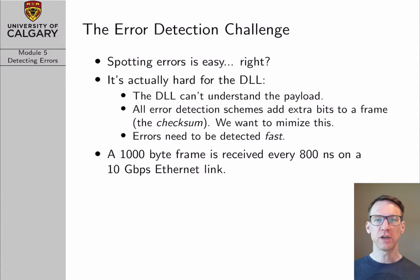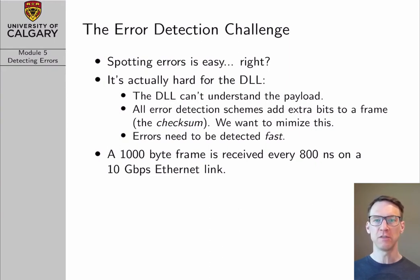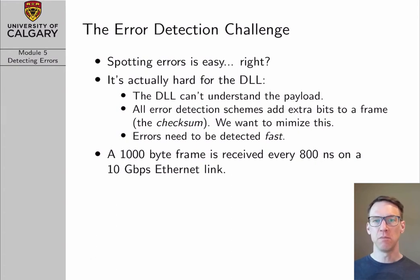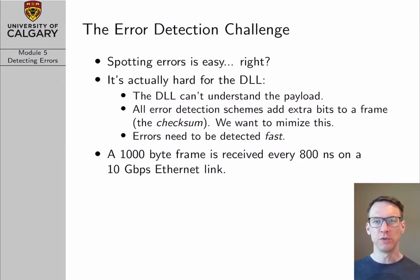The first thing I want to talk about is why this is a problem, because it might seem at first glance that detecting errors should be easy. Obviously, it's easy for humans. If we download a program that gets corrupted, the program doesn't work. If we are watching a video stream that gets some bad bits in it, we see the picture gets garbled, the audio gets bad. If we receive an email filled with garbled nonsense, we know that some bits have been corrupted. So it seems super easy for humans to detect errors.